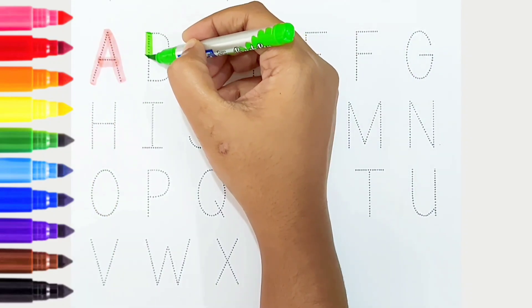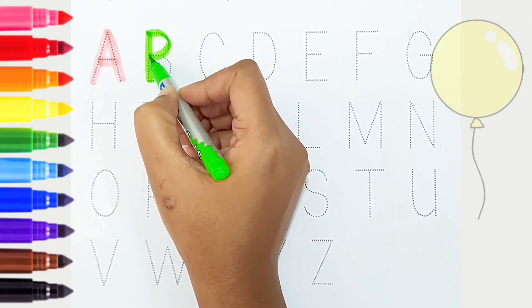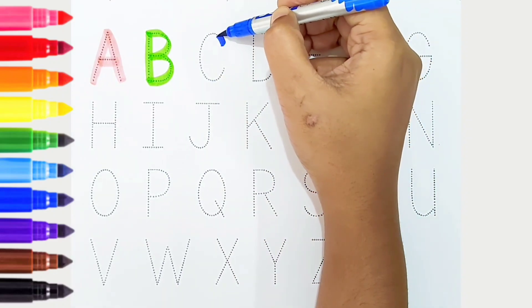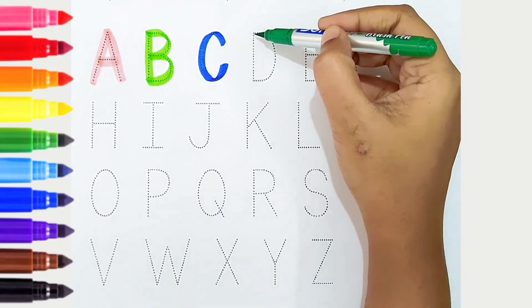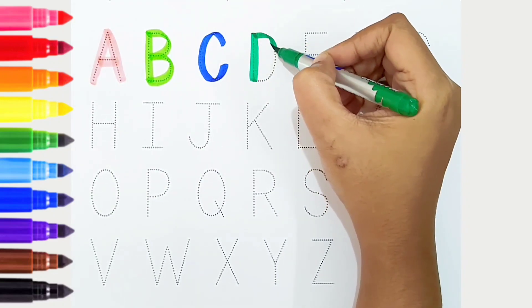B, light green color, is for balloon. C, dark blue color, is for candy. D, dark green color, is for dog.